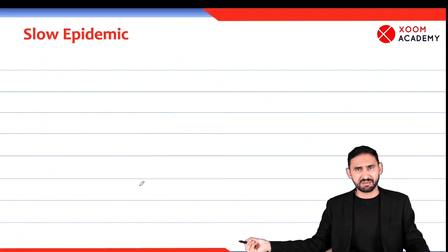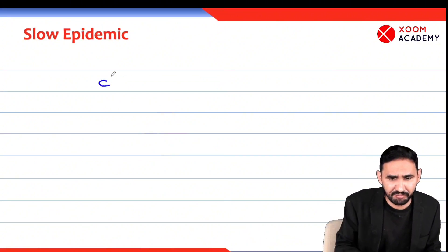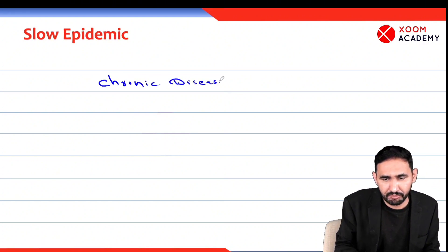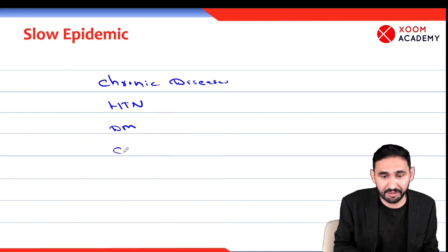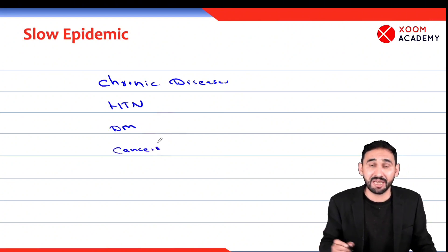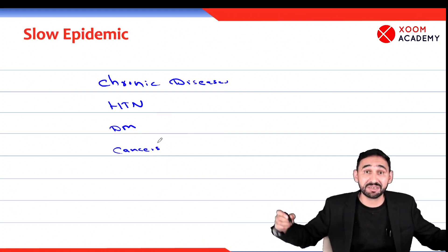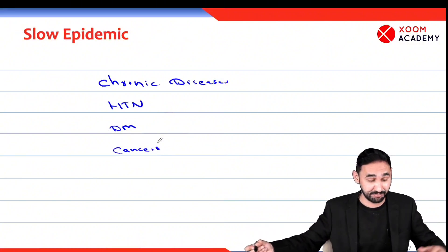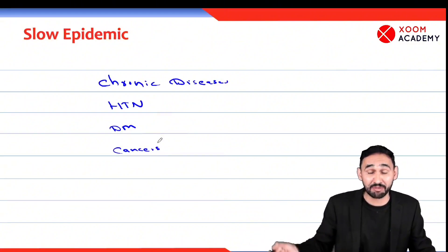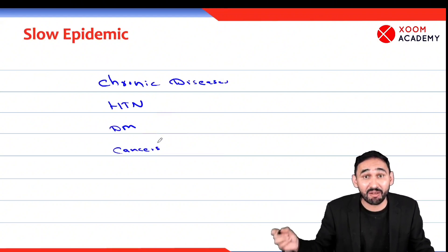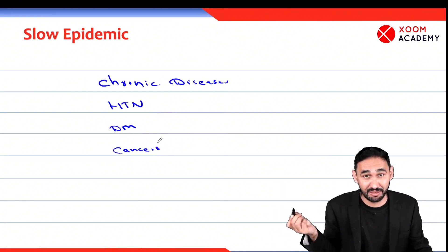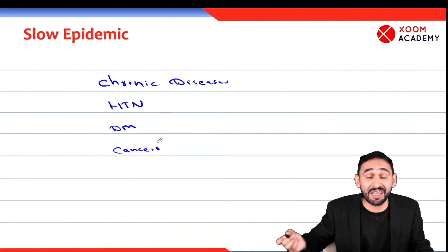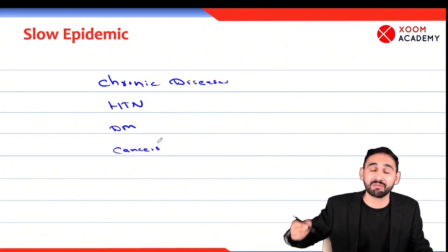We can find secondary attack rate from these diseases — are they spreading from person to person, or through vectors? There is a difference between common source and propagated epidemic. Propagated epidemic is more severe and can infect a huge population. Then there is slow epidemic — chronic diseases like hypertension, diabetes, and cancers. They have a longer latent period, their incubation period is greater, they appear slowly. Most cases are asymptomatic. Chronic diseases show the iceberg phenomenon. Slow epidemic may appear after 20 to 30 years.